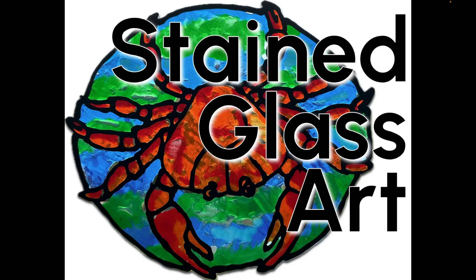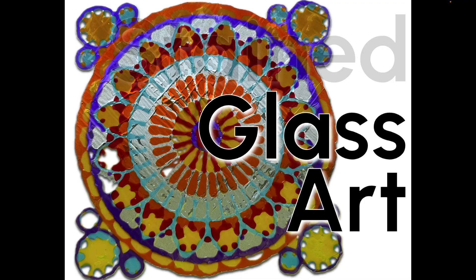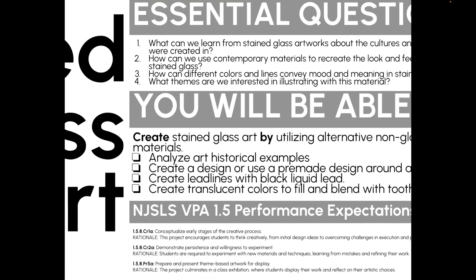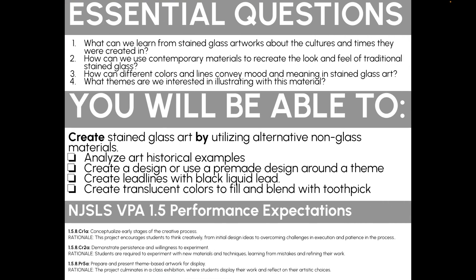Hey artists, in this video we're going to talk about our stained glass art project. The essential questions for this project are: What can we learn from stained glass artworks about the cultures and times they were created in? How can we use contemporary materials to recreate the look and feel of traditional stained glass? How can different colors and lines convey mood and meaning in stained glass art? What themes are we interested in illustrating with this material?